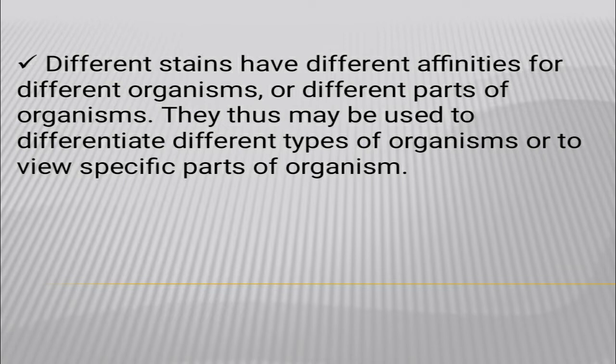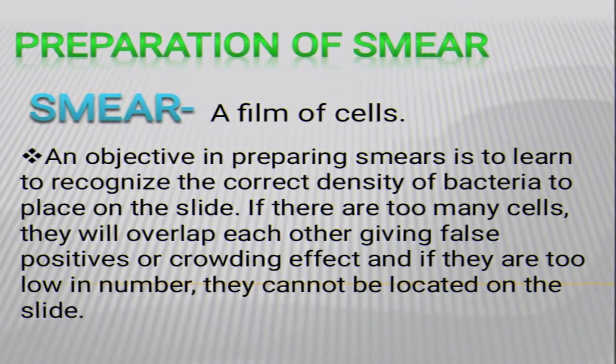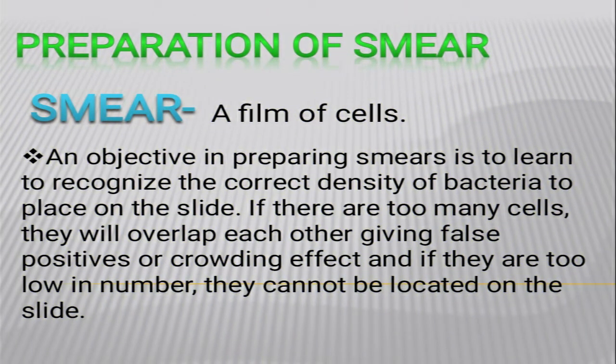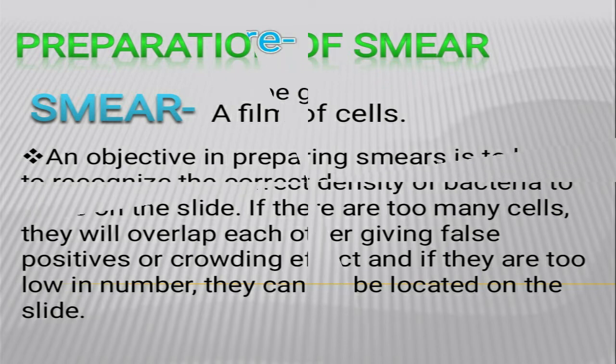Next, what is a smear and how do we prepare a film of cells? We call a smear a film of cells. Whatever staining methods are used, they start with preparing a fixed smear on a microscopic slide. The objective of a smear is to prepare the bacteria inoculate on the slide at the correct density. If there are too many cells they will overlap and give a false positive result; if there are very few cells, we will not be able to locate them on the slide.